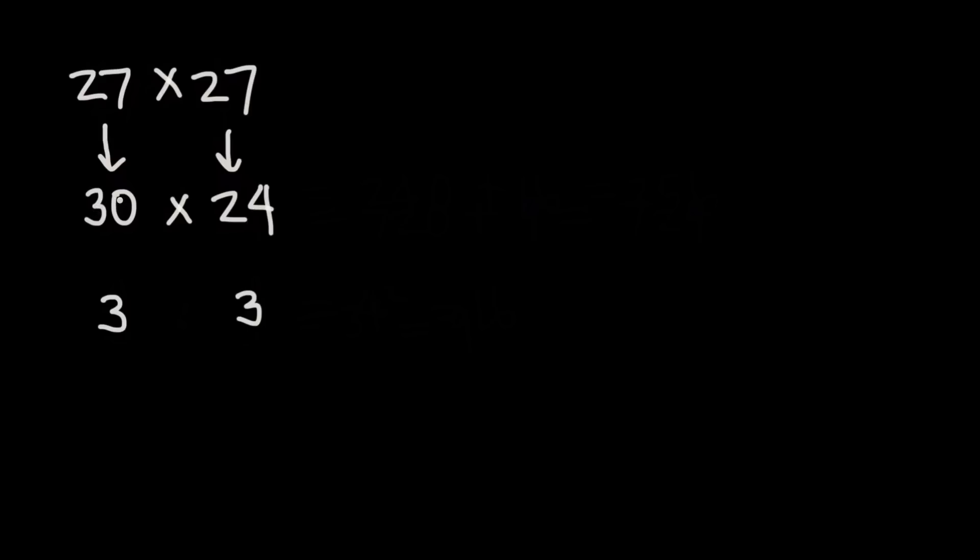So this problem 30 times 24, really you can think of as 3 times 24, ignoring that 0. And 3 times 24 is certainly much easier, that's 72.